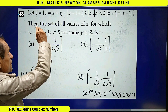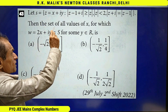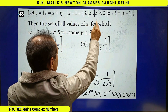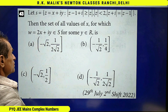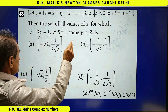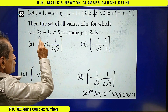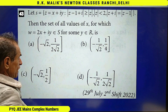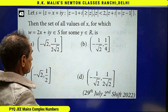In this question, let S denote the set of all complex numbers which satisfy this condition, this condition, and this condition. Then the set of all real values of x for which w equals 2x plus iy belongs to the set S, where y is some real number.